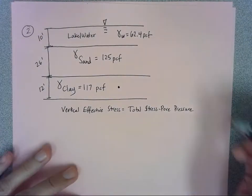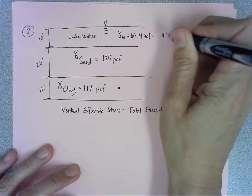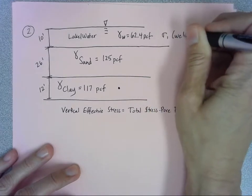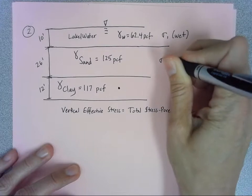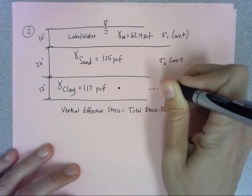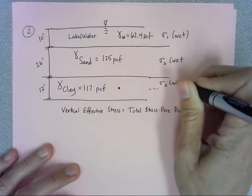We'll call this top layer sigma 1 - obviously that's wet. Sigma 2 through the sand is going to be wet, and then halfway through the clay layer, I'll call that sigma 3, which is also wet.